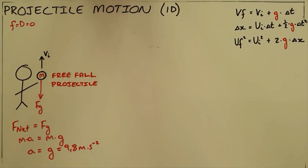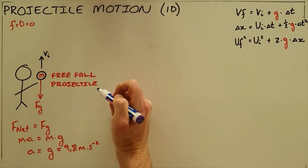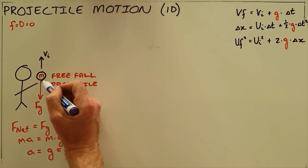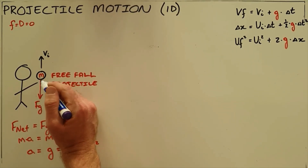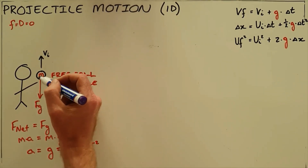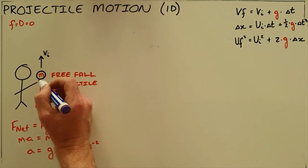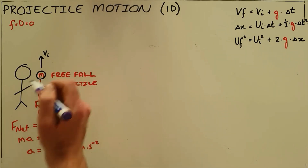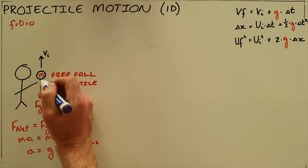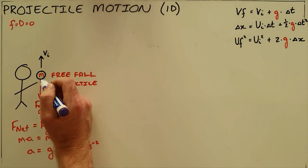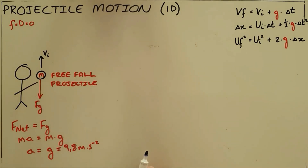It is important to realize that this section only deals with the motion of an object once it has left the thrower's hand or the gun firing it — only while it is in free fall. There are external forces applied to accelerate it initially, but once it leaves the hand or is fired, only the force of gravity acts on it.